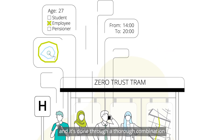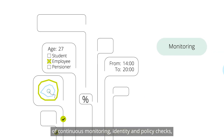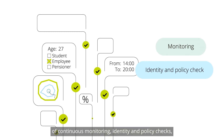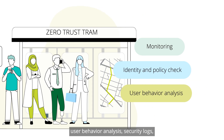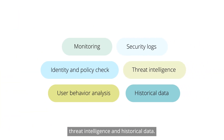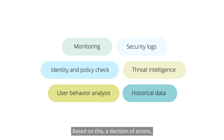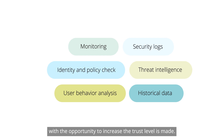New validation is constantly necessary for every interaction, and it's done through a thorough combination of continuous monitoring, identity and policy checks, user behavior analysis, security logs, threat intelligence, and historical data. Based on this, a decision of access, no access, or limited access — with the opportunity to increase the trust level — is made.